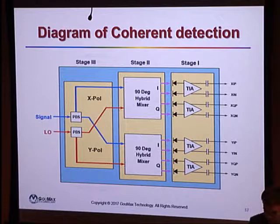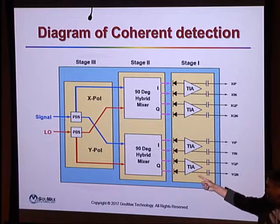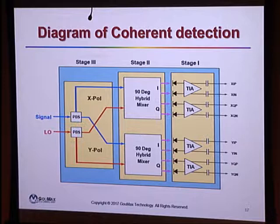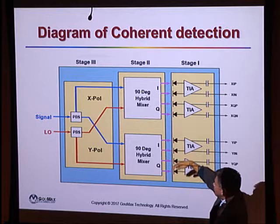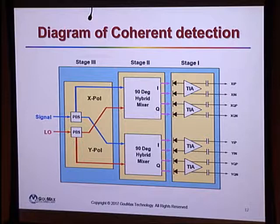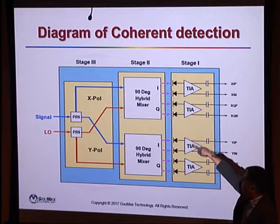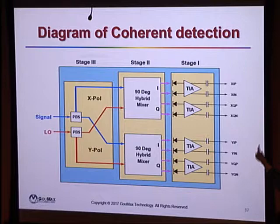This diagram shows coherent detection. The weak signal light from perhaps 7,000 km away and the strong local oscillator enter the system. A polarization beam splitter (PBS) separates both into X and Y polarization components separately. The X and Y signal and LO components are each sent into the hybrid to interfere, and after digital signal processing (DSP) you can recover the full phase signal — including both in-phase (I) and quadrature (Q) components.